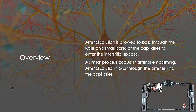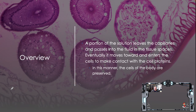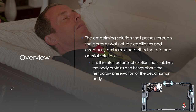Arterial solution is allowed to pass through the walls and small pores of the capillaries to enter the interstitial spaces. Arterial solution flows through the arteries into the capillaries. A portion of the solution leaves the capillaries and passes into the tissue spaces, eventually moving toward and entering the cells to make contact with the cell proteins. In this manner, the cells of the body are preserved. The embalming solution that passes through the pores or walls of the capillaries and eventually embalms the cells is the retained arterial solution — it is this retained arterial solution that stabilizes the body proteins and brings about temporary preservation.